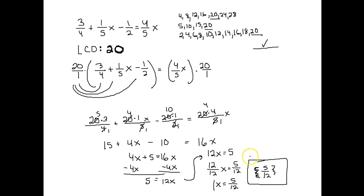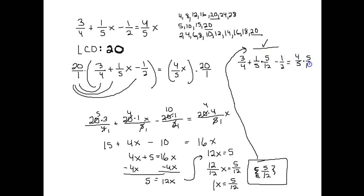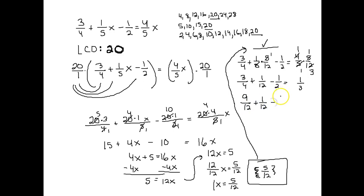To check, plug five-twelfths back into the original equation. On the left: three-fourths plus one-fifth times five-twelfths reduces to one-twelfth, minus one-half. Converting to twelfths: nine-twelfths plus one-twelfth minus six-twelfths gives four-twelfths, which equals one-third. On the right: four-fifths times five-twelfths reduces to one-third. One-third equals one-third — it works!